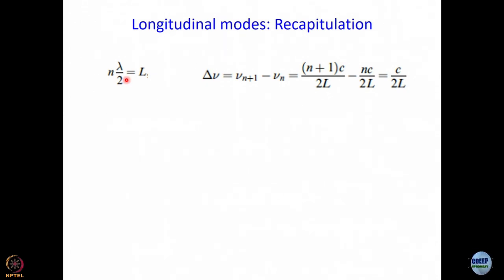What is 2L by C? It is a round trip time. So it turns out that delta nu, the difference between two successive modes, is equal to inverse of round trip time. If you do not remember this, you better write it down. We are going to need this later on in this module or next.